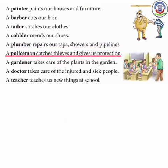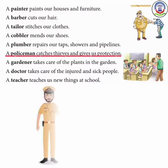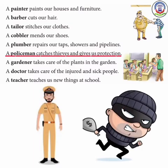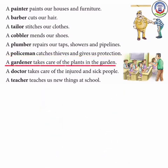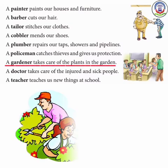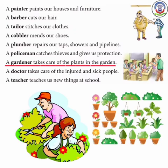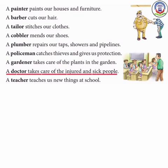A policeman catches thieves and gives us protection. Policeman चोरों को पकड़ता है और हमें सुरक्षा देता है। A gardener takes care of the plants in the garden. Gardener का मतलब होता है माली, जो बगीचे में पौधों की देखभाल करता है, उन्हें पानी देता है, जिससे पेड़-पौधे हरे-भरे रहते हैं।